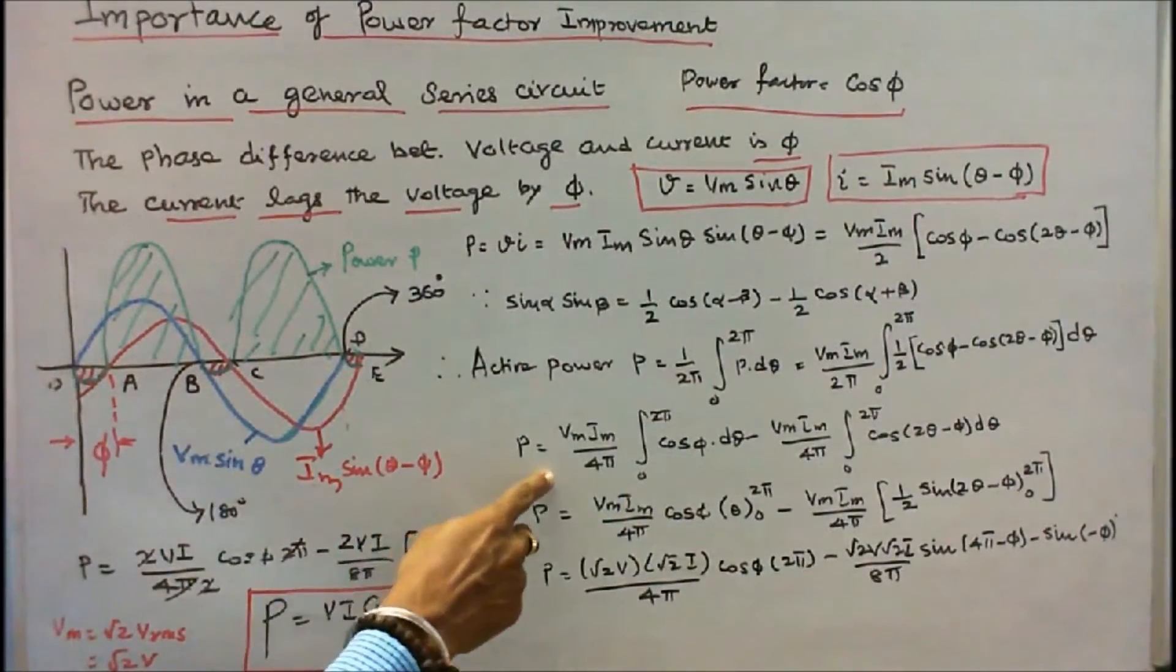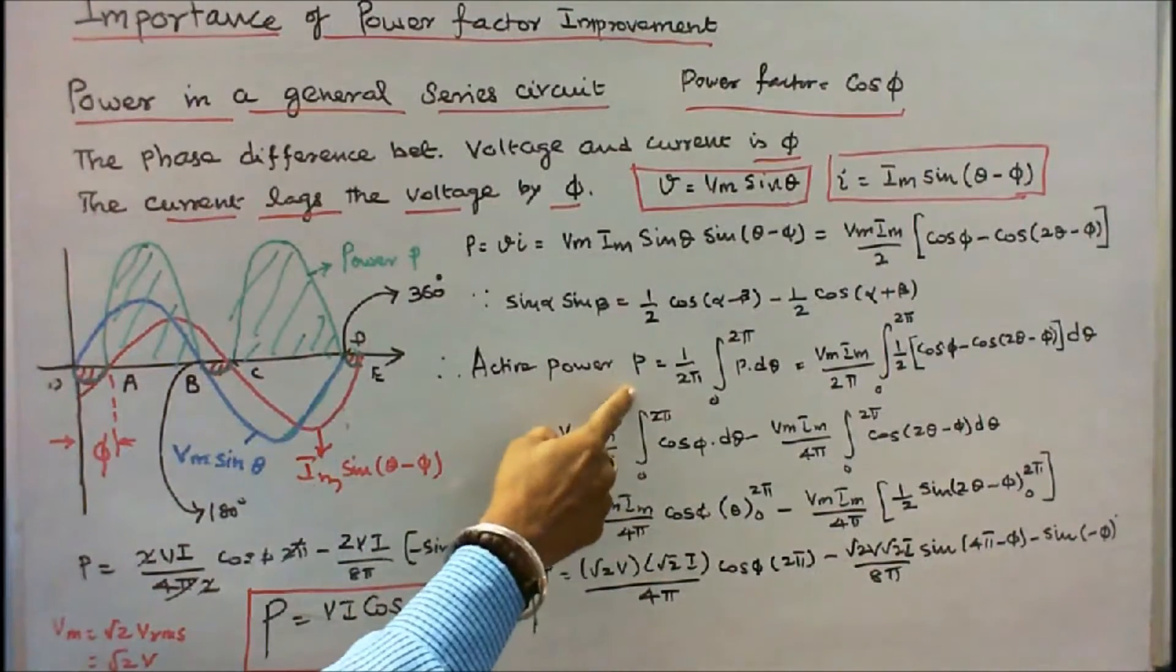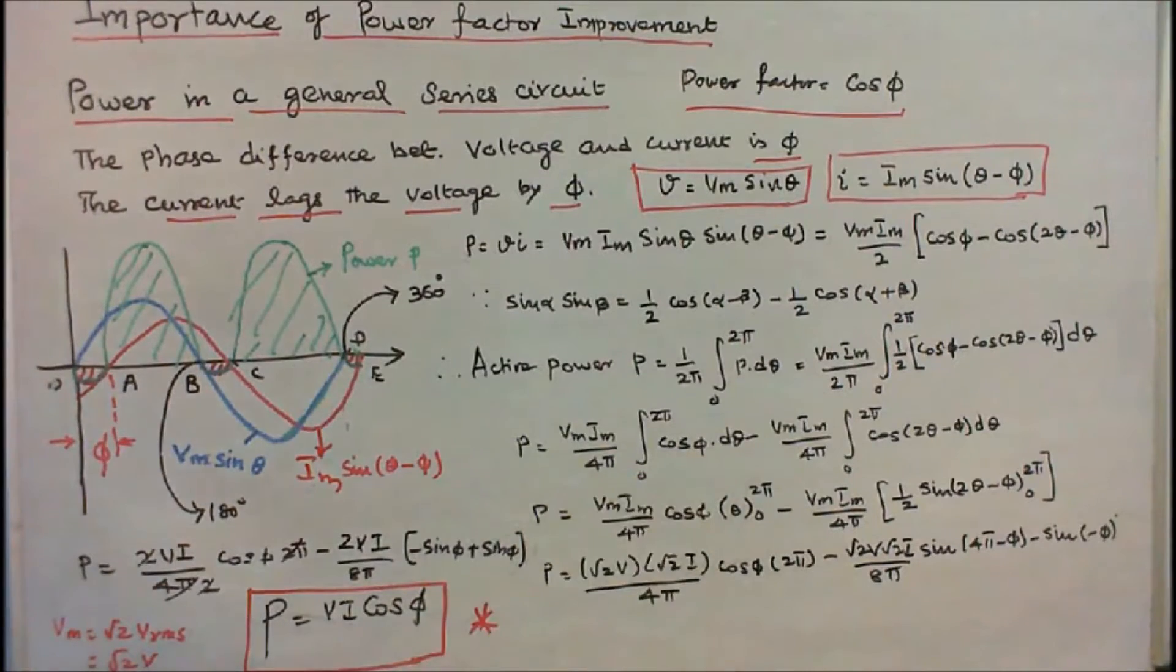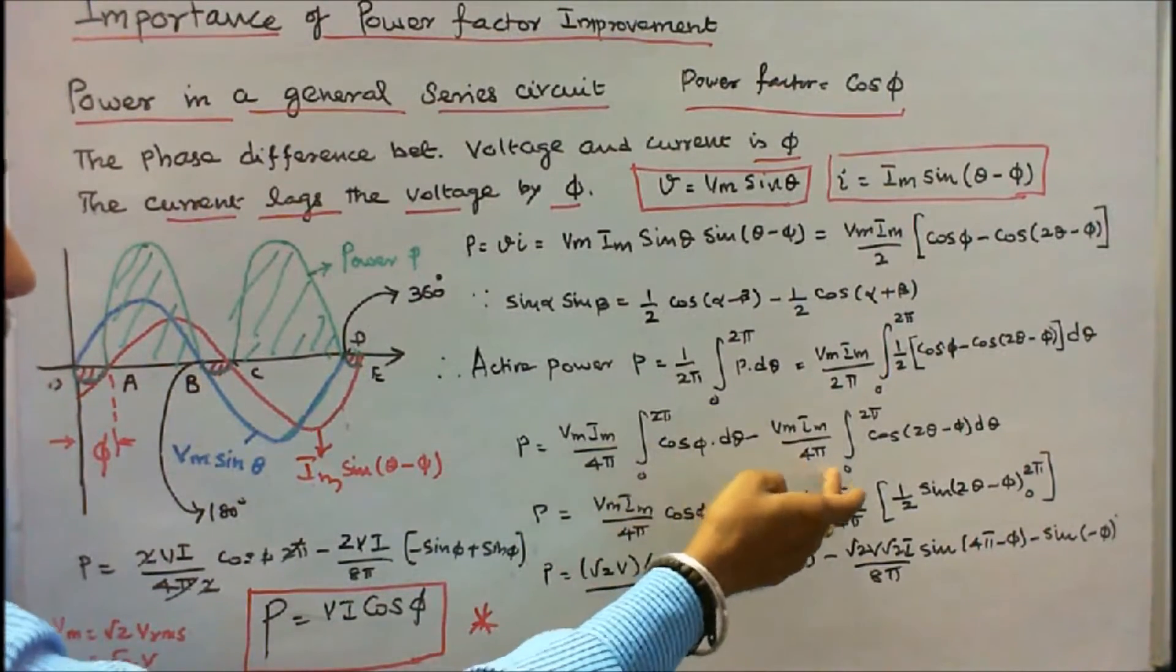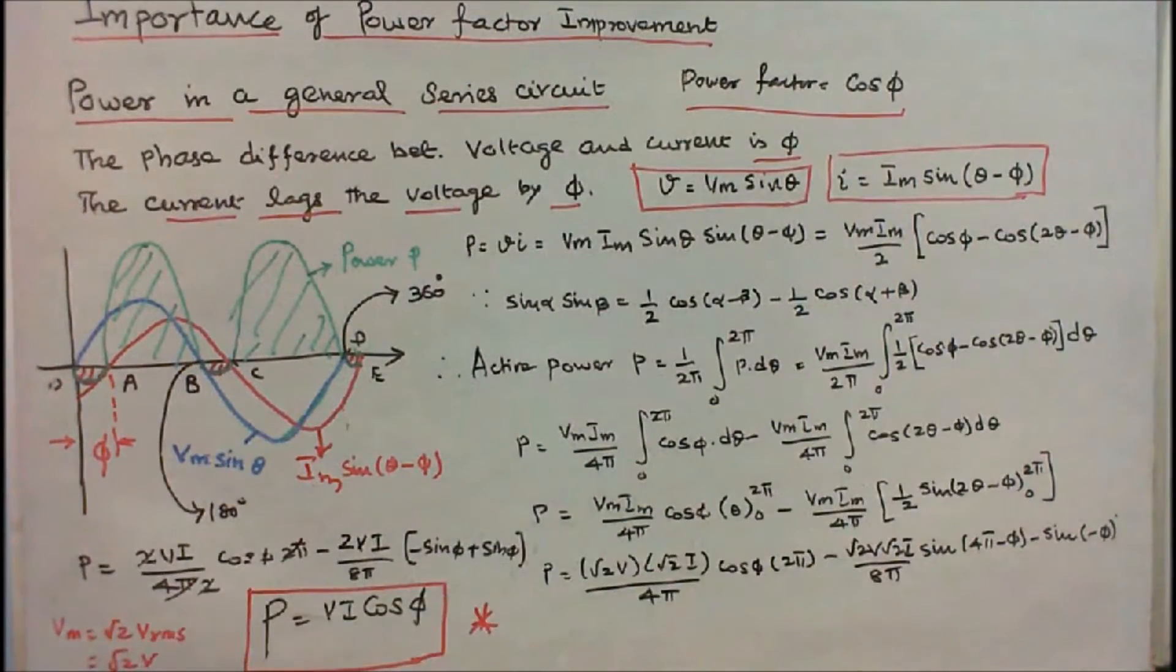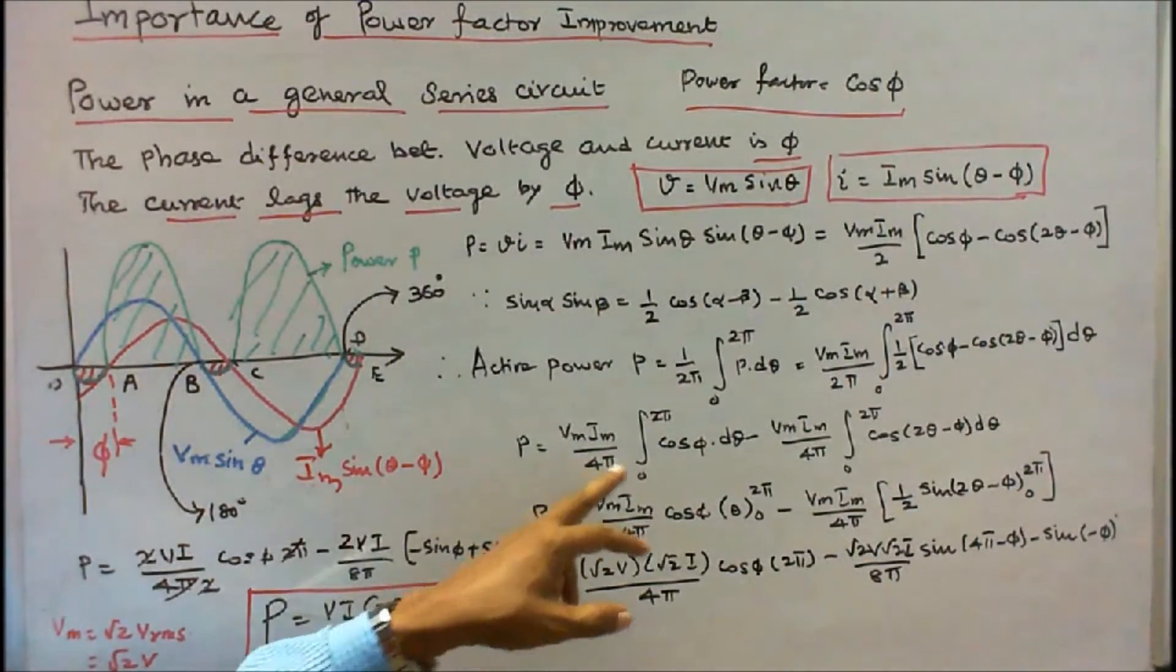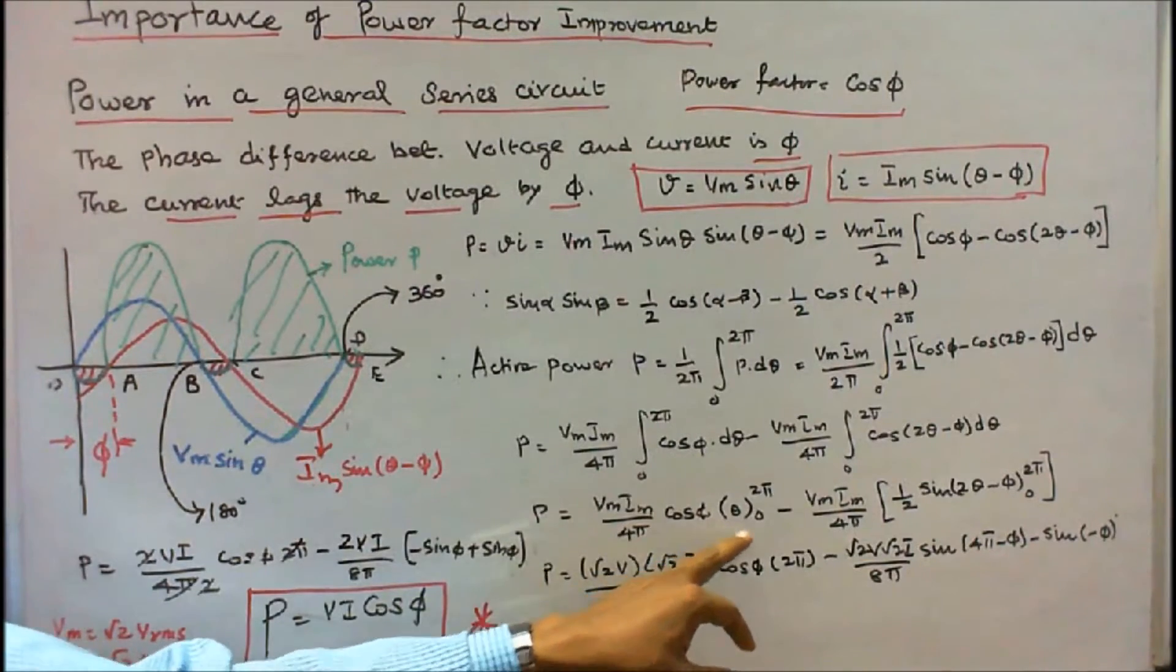P is equal to (Vm Im / 2π) times the integral from 0 to 2π of [cos φ minus cos(2θ - φ)] dθ, limits 0 to 2π.